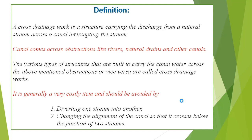Cross-drainage work is generally a very costly item and should be avoided by first diverting one stream into another, or second, by changing the alignment of the canal so that it crosses below the junction of the two streams.